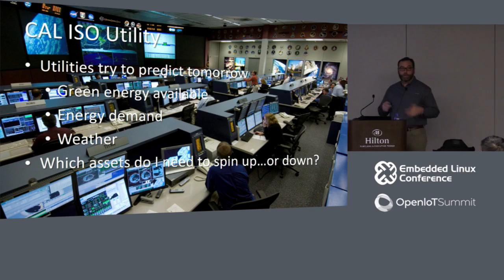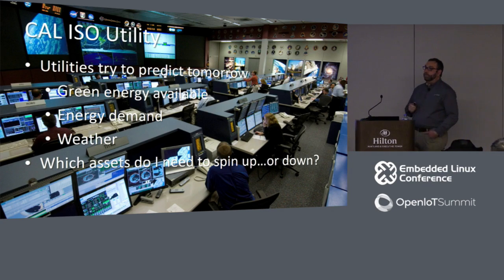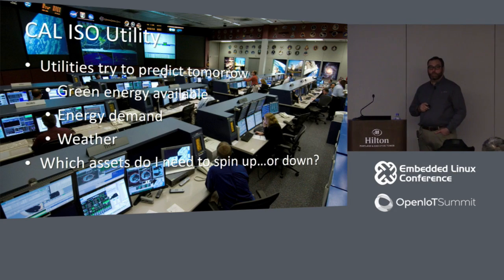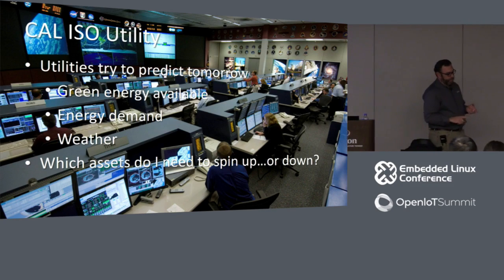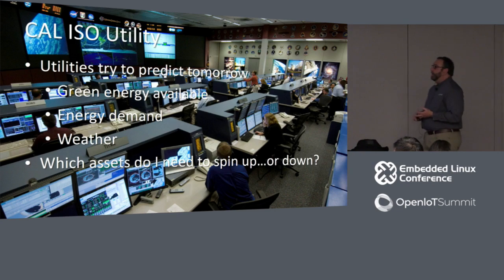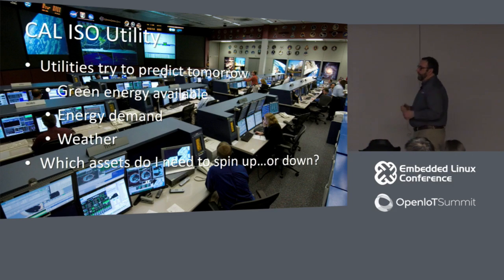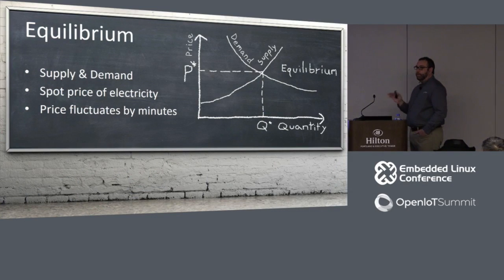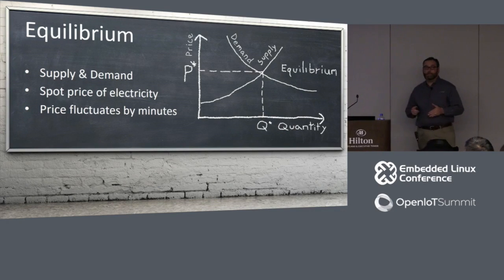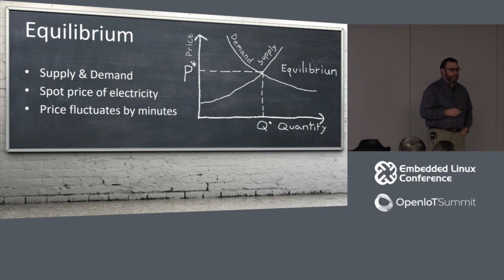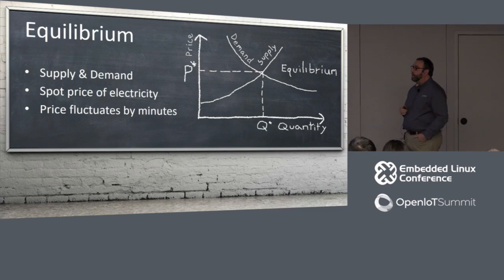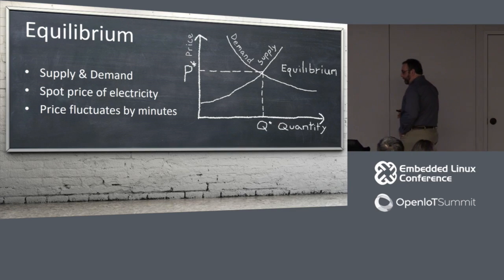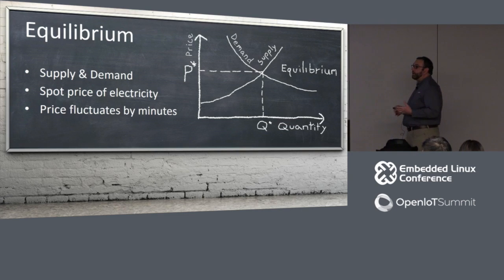In California the California Independent Systems Operator — basically the utility for the state — has an incredibly difficult job: they're trying to predict the future, looking at all different kinds of data sources. How much power was needed last year? How many resources do I have generating electricity right now? What's the weather going to be like tomorrow? They mash all these data feeds up using massive supercomputer systems to figure out what to spin up or spin down to keep the grid in balance. One of the tools CalISO has is the spot price of electricity — the market price they pay per kilowatt hour to energy producers.